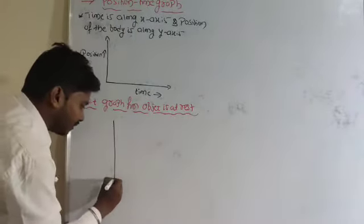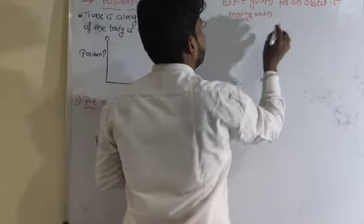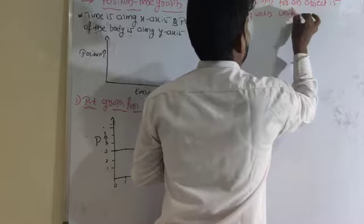If the object is at rest, the nature of the position-time graph is a straight line parallel to the x-axis. Now, if the object is moving with uniform motion, what will be the nature of the position-time graph?